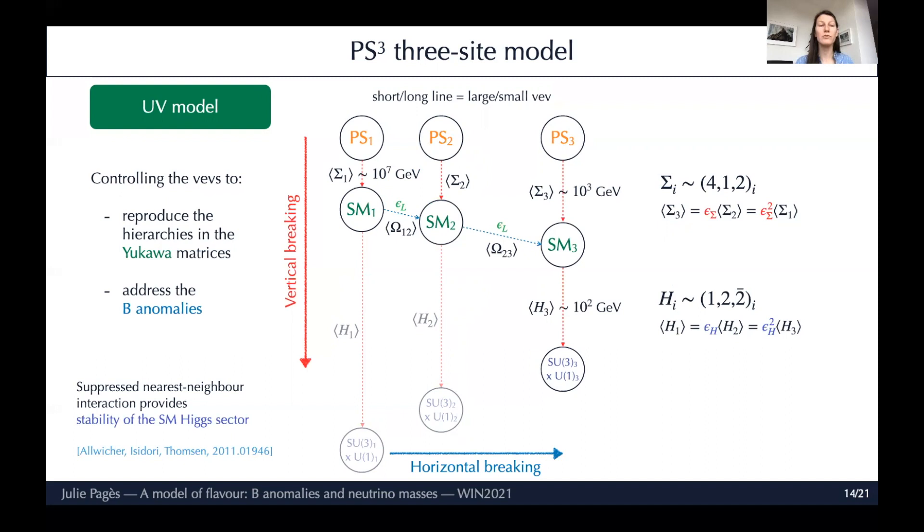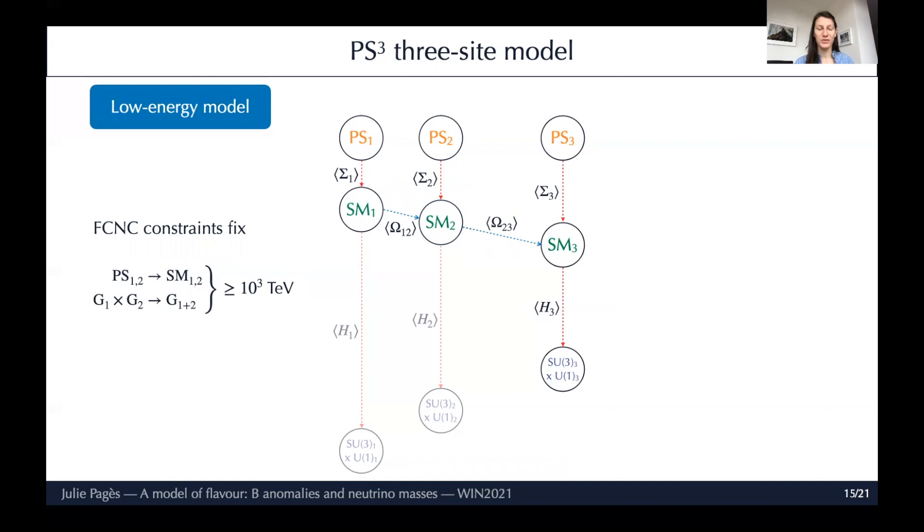We can control all the VEVs - large VEV means short line and long line means small VEV. By moving these lines around, by moving the VEV, we can reproduce the Yukawa matrices and we can also address the B anomalies. To do so, we need a Σ that is mostly localized on the first site with an exponential decay, an exponentially suppressed interaction to the other sites. This exponential suppression, this εH, this nearest-neighbor interaction suppression gives stability to the standard model Higgs sector, as was shown in this paper.